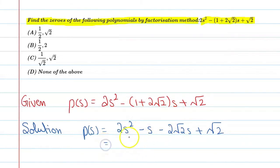Let's find the next step. In this step you can see you can take s common. When you take s common, this will be (2s - 1). And from this step you can take minus √2 common. Then you can say it is (2s - 1) once again. So now you have two linear factors: (s - √2) and (2s - 1).